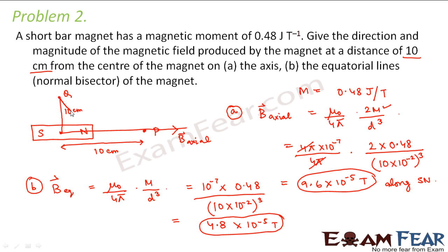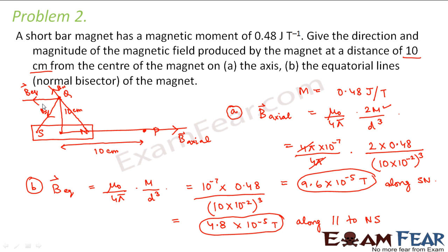As for the direction at point Q: due to the north pole, field lines originate outward from north; due to the south pole, field lines go inward toward south. The resultant net equatorial magnetic field at Q is the vector sum of these two contributions, and it ends up directed parallel to the NS direction — that is, parallel to the north-to-south direction of the magnet.